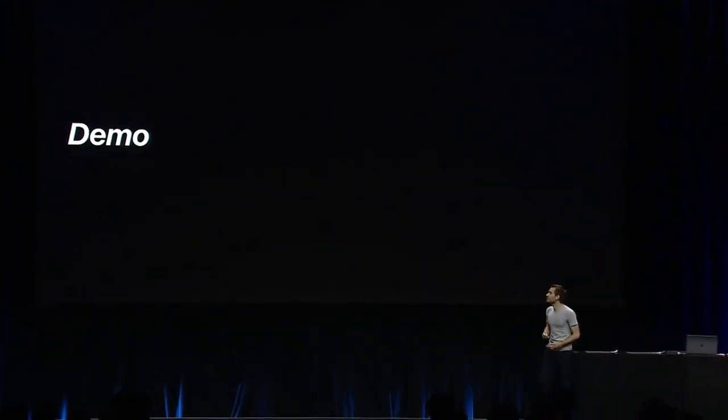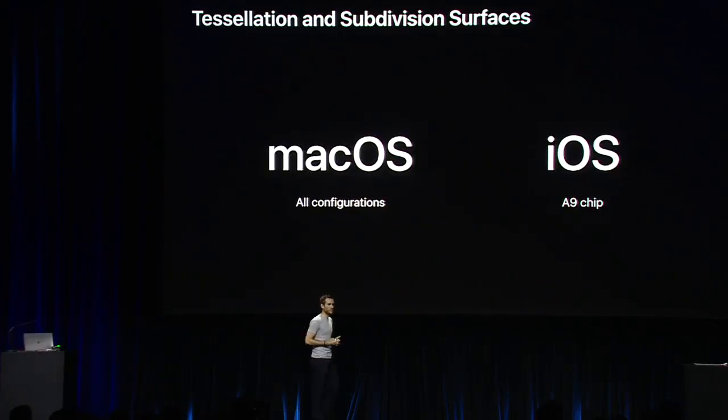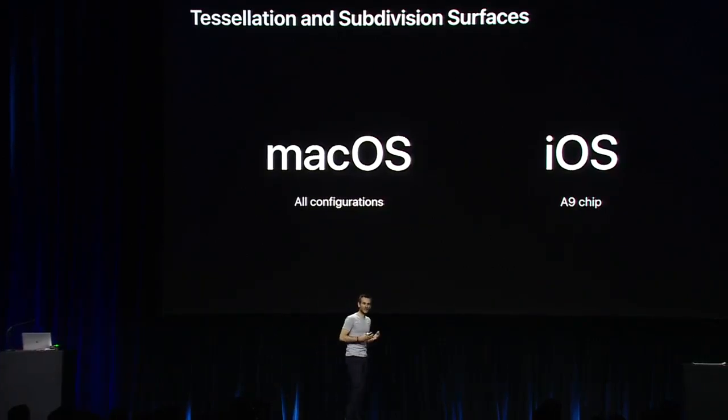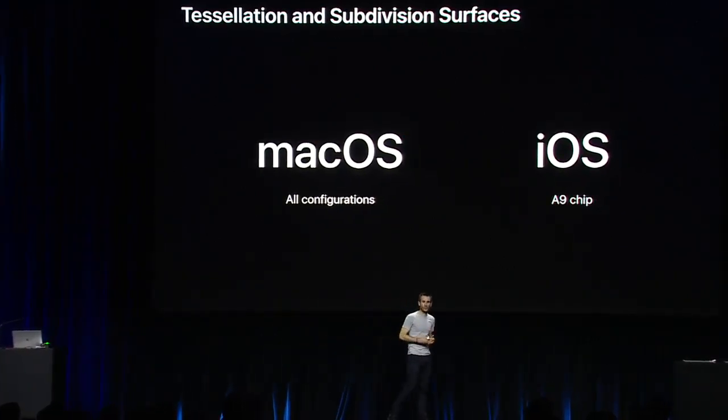That's it for the demo. As a wrap-up, tessellation and features relying on tessellation are available with Metal on all Macs, and available on iOS devices with the A9 chip or later — that includes iPhone 6s and all iPad Pro models.